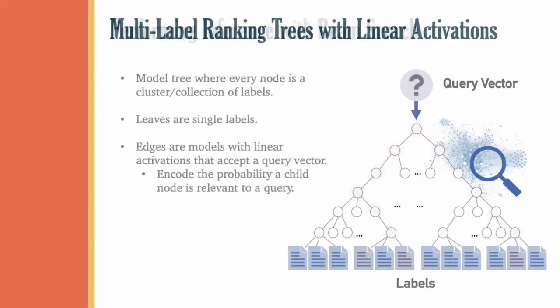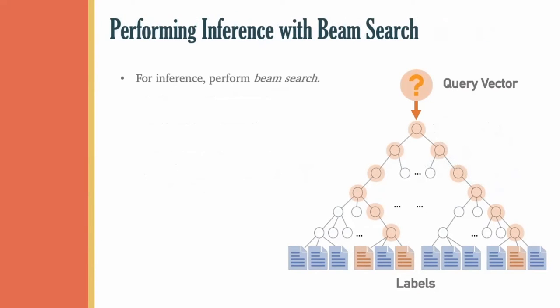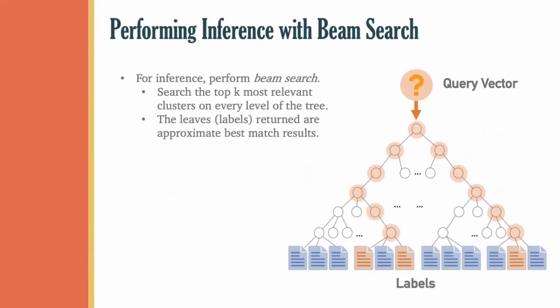So instead, it is common to use a beam search approach, where instead of computing all likelihoods, we instead traverse the tree from top to bottom and only search the top k clusters on every layer. When the beam search reaches the bottom of the tree, we will have found a relatively good approximation to the top k most relevant search results.